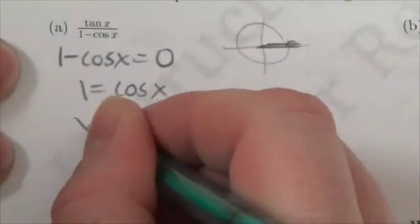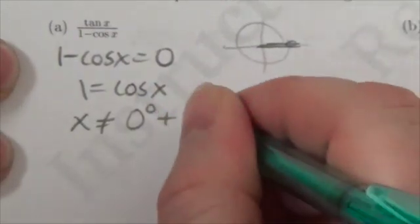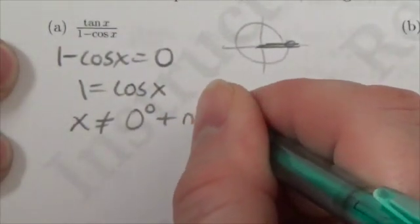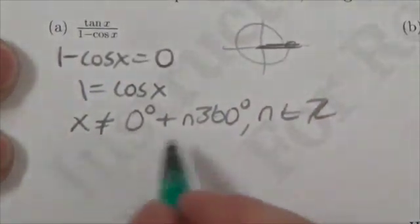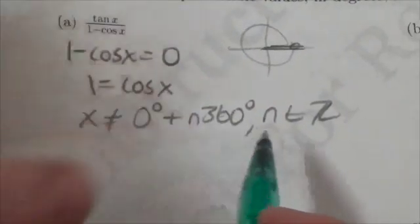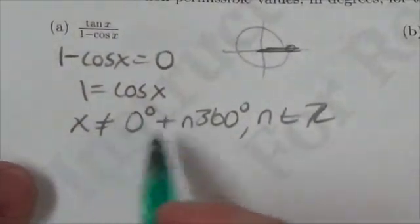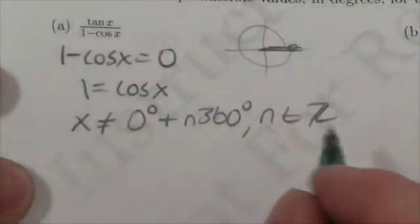So I cannot allow x to equal zero plus multiples of 360, where n is an element of the integers. Now, I could have written that a little differently. I really could have just said, I can't let x equal n times 360. But sometimes it helps just to have that placeholder in the expression right there.